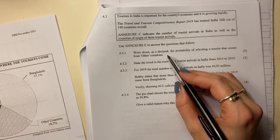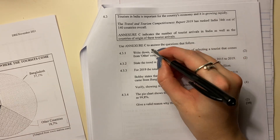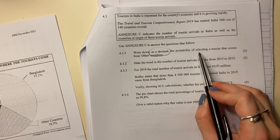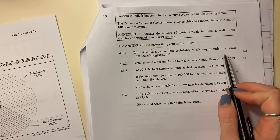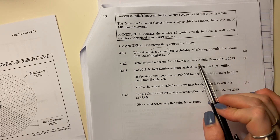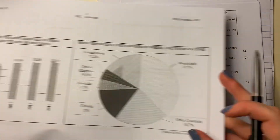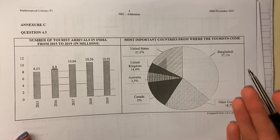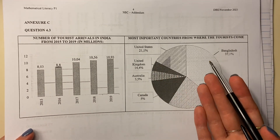It says write down as a decimal — it's telling you what format it wants the answer in — the probability of selecting a tourist that comes from other countries. So remember probabilities: which of these two graphs do I use?